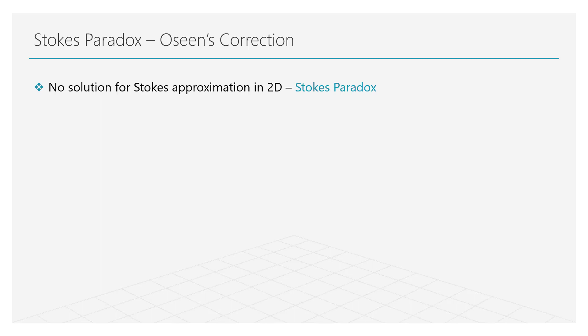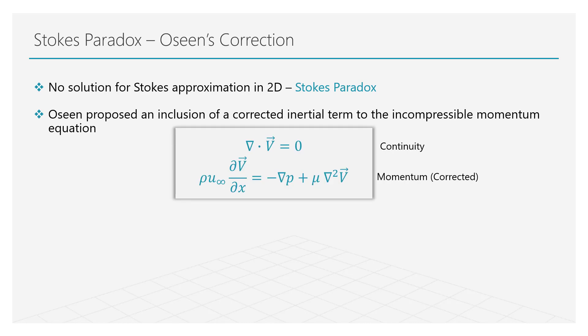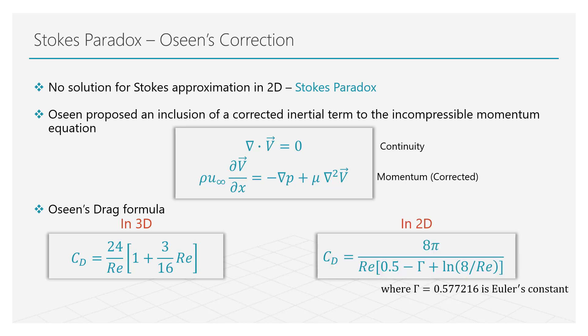Based on this, he noted that the inertial terms cannot be neglected. On this hypothesis, Oseen proposed an inclusion of a corrected inertial term to the incompressible momentum equation. Based on these new set of equations, the corrected drag coefficient on a sphere is given by this formula. This solution can be limited to two dimensions and by doing so, we obtain the drag coefficient on a cylinder. Experimental results have shown that these formulae hold as long as the Reynolds number of the flow is less than 1.